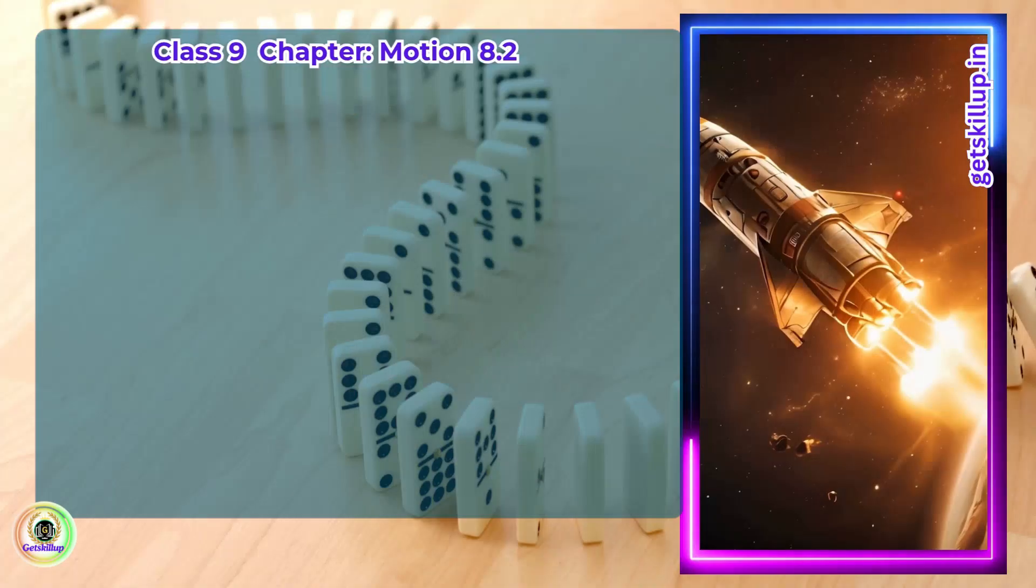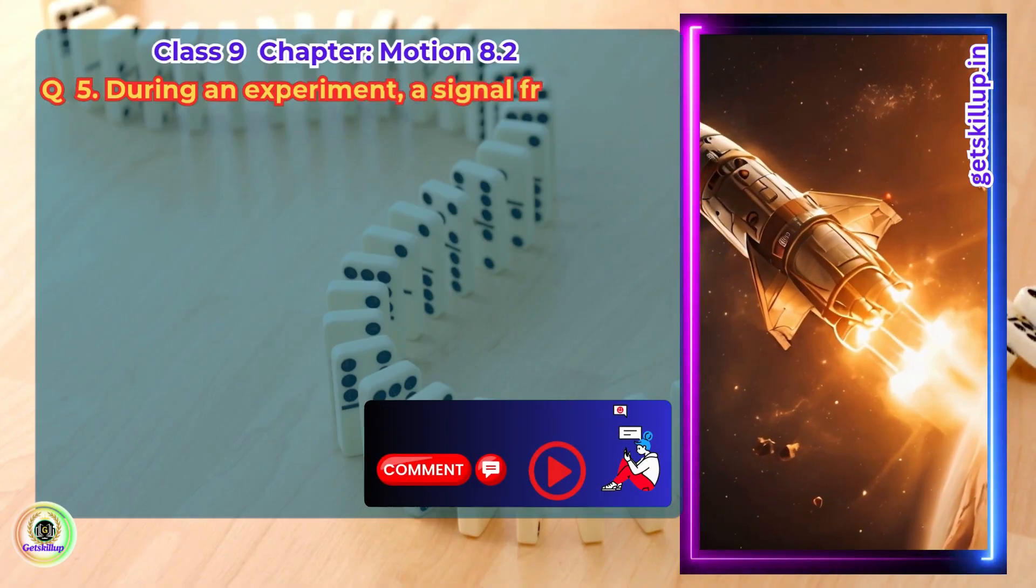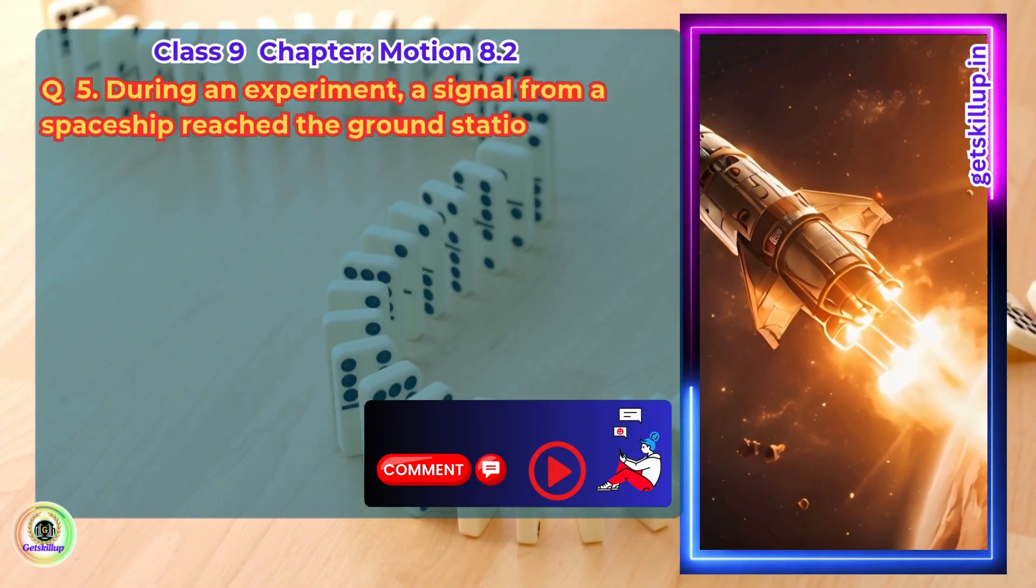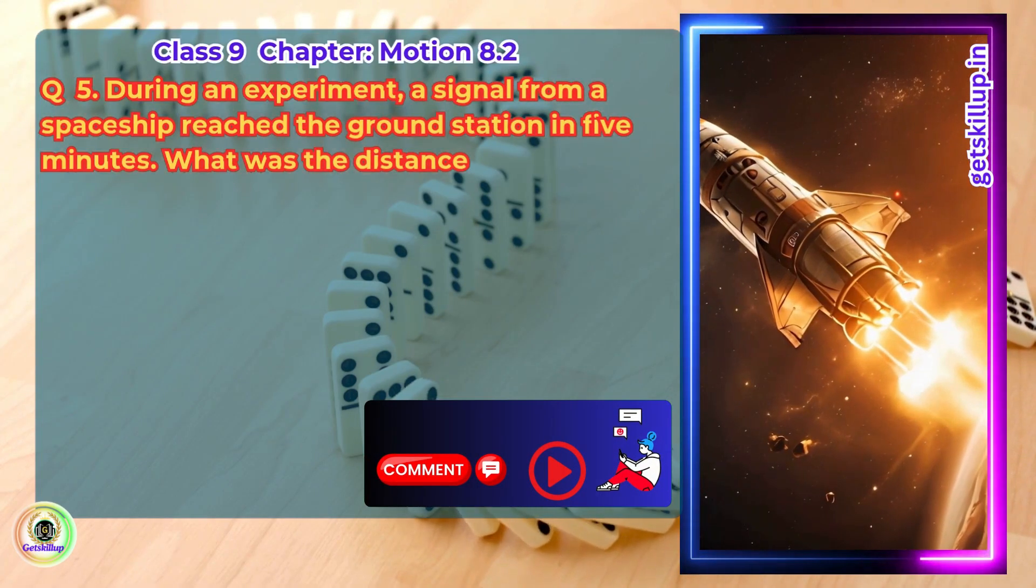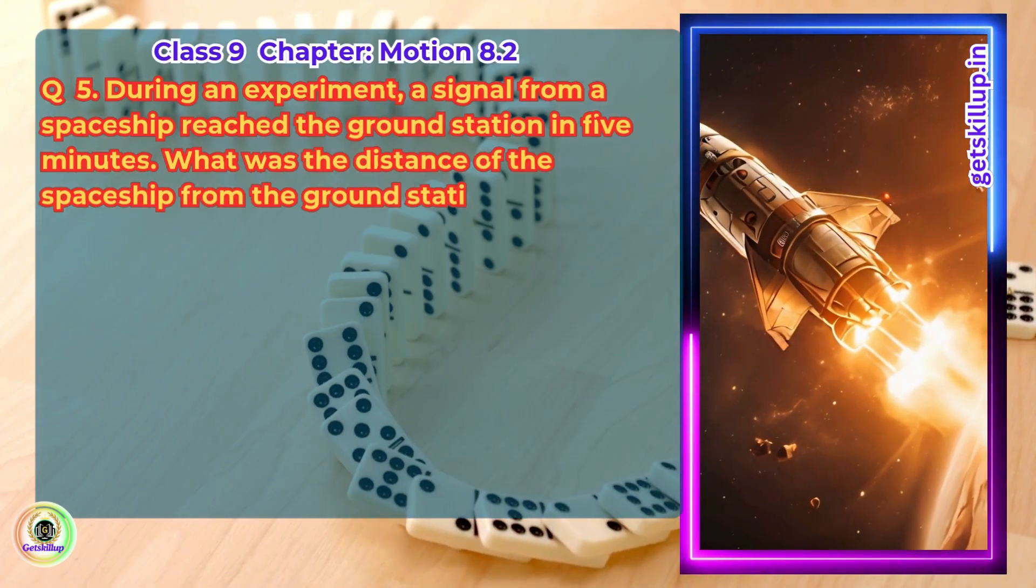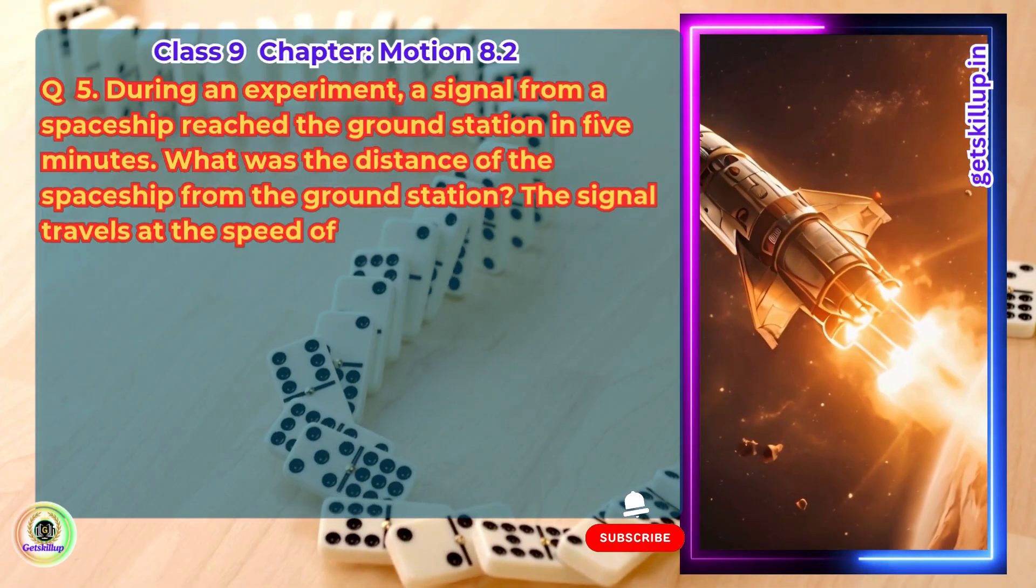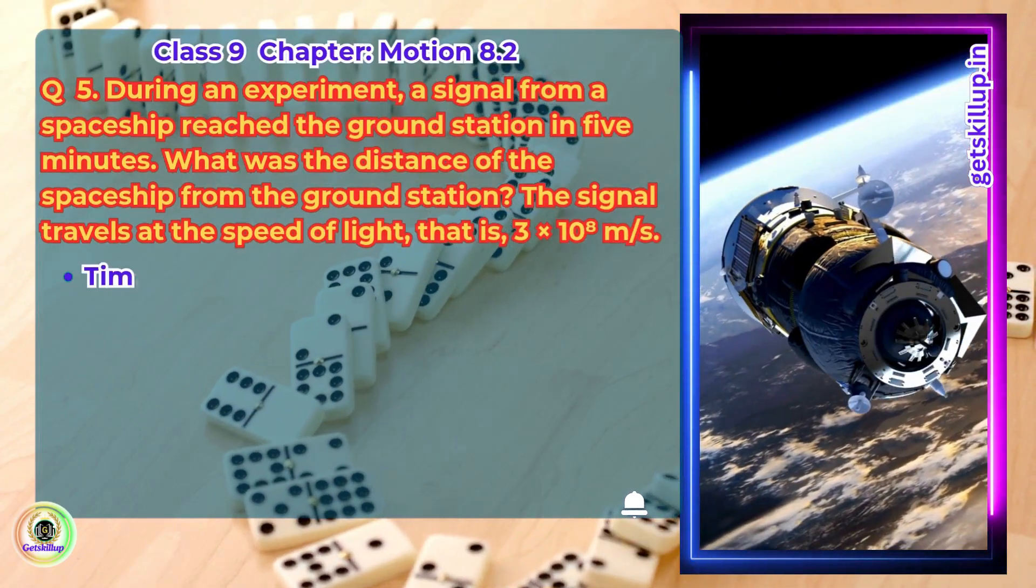Question 5. During an experiment, a signal from a spaceship reached the ground station in 5 minutes. What was the distance of the spaceship from the ground station? The signal travels at the speed of light, i.e. 3 x 10 to the power of 8 m per second. Answer.